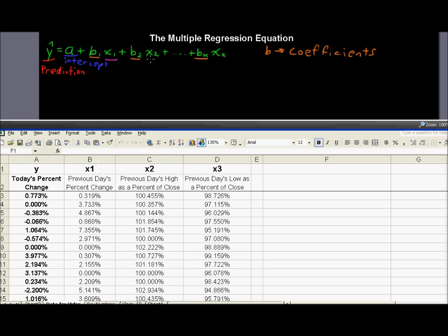And then, of course, the x's, as we've said, are the variables. And you can have as many as you want. In our example, we have three.